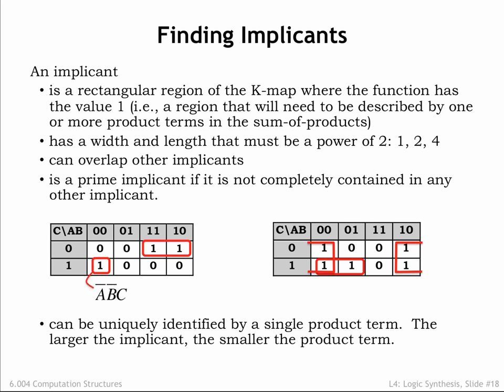The first implicant we circled corresponds to the product term NOT-A and NOT-B and C, an expression that evaluates to TRUE when A is 0, B is 0, and C is 1.